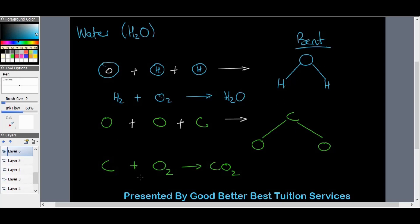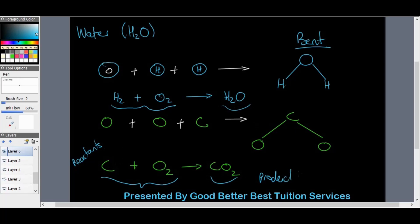Everything on the left-hand side of the arrow we call reactants, and everything on the right-hand side we call products. So everything on the left side of the equation will be known as your reactants, and everything on the right will be known as your products.